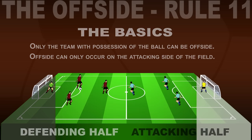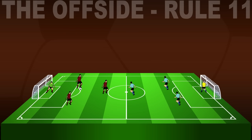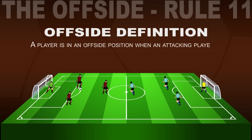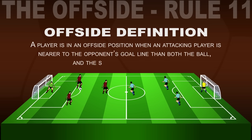So what is offside then? Technically speaking, a player is in an offside position when an attacking player is nearer to the opponent's goal line than both the ball and the second to last opponent.